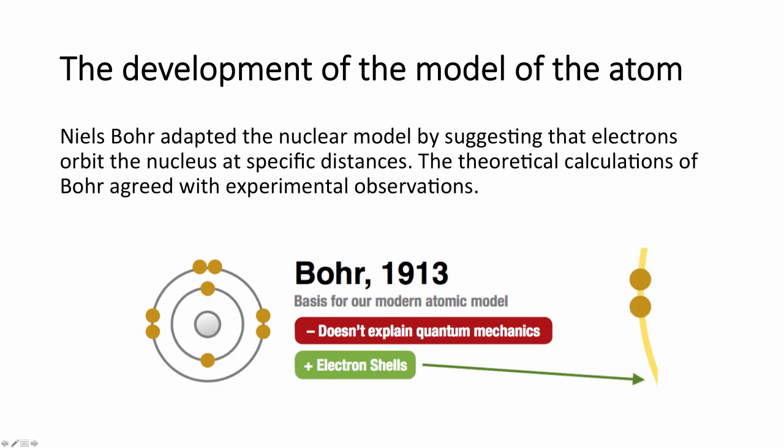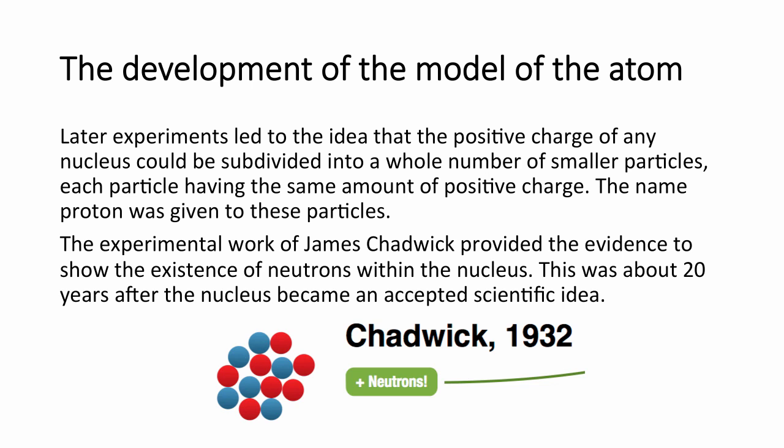The next adaptation of the model was Niels Bohr, who suggested electrons orbit in specific orbitals or energy levels — that they exist in these regions but not between energy levels, and these are specific for different elements. The last piece of the puzzle was the idea that the positive charge of the nucleus could be broken into two particles: protons and neutrons. Chadwick actually provided evidence for the discovery of neutrons.